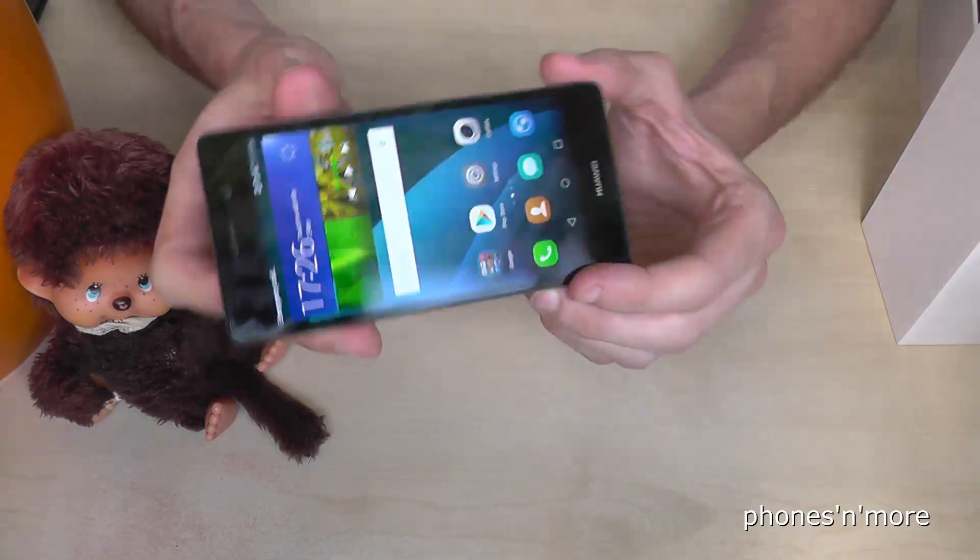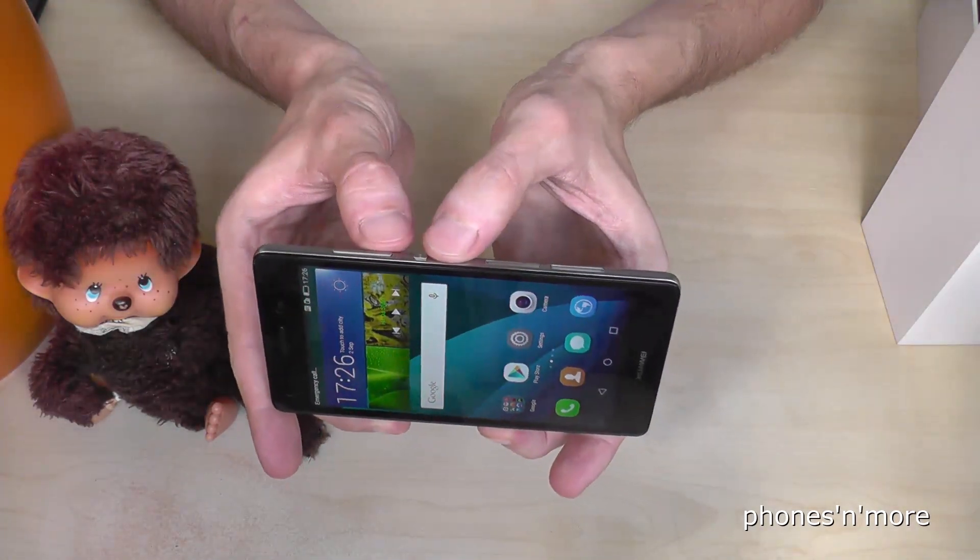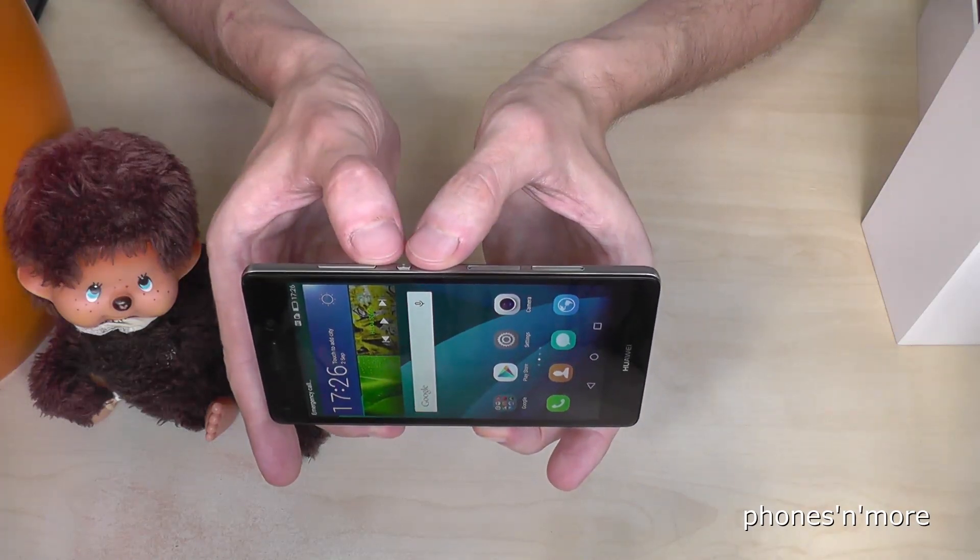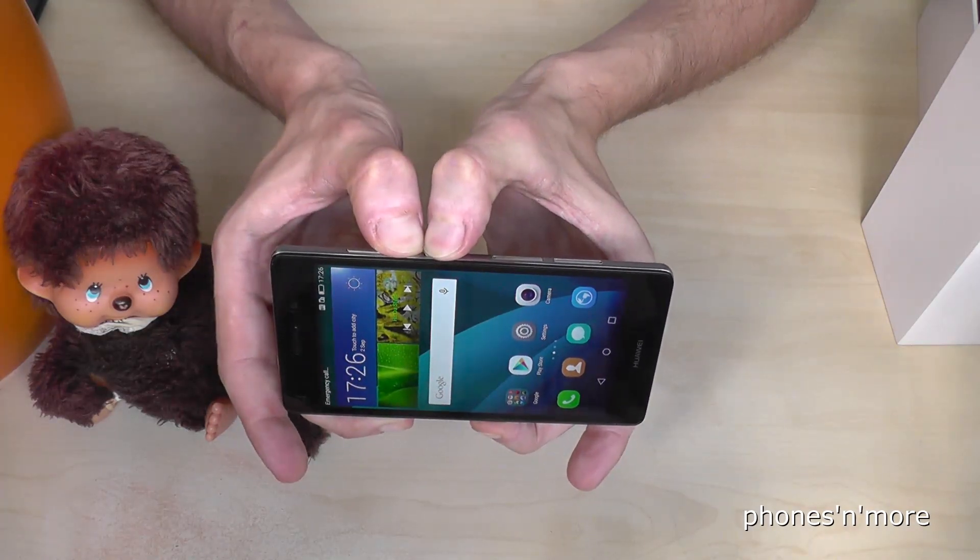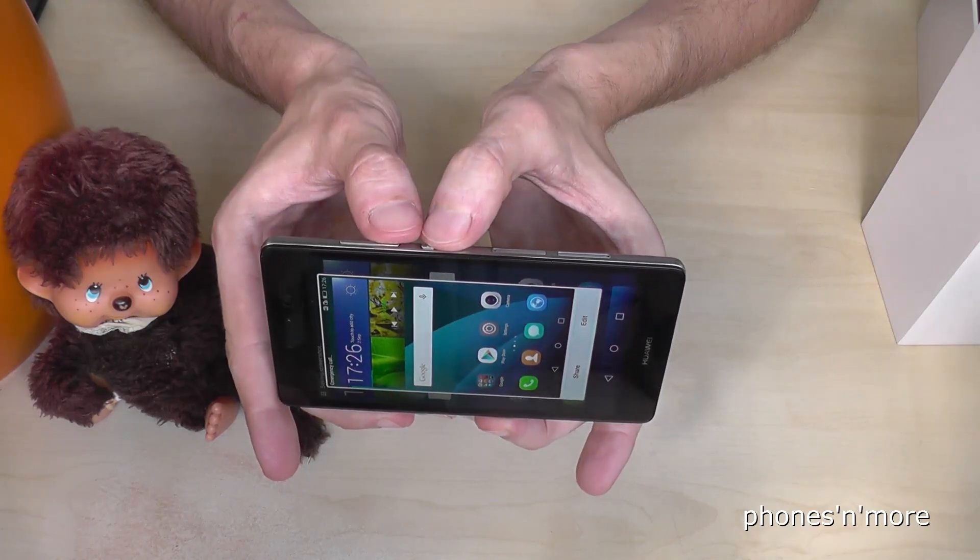To take a screenshot you need at first the power on off button, then the volume down button is this one, and then you press it at the same time and the capture is made.